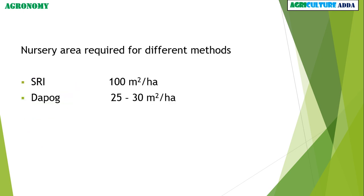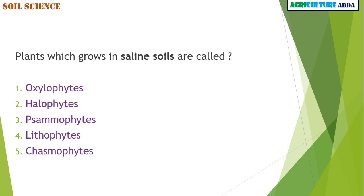The other method requiring nursery area is the SRI method, which requires 100 m² per hectare. As mentioned, the dapog method requires 25–30 m² per hectare. Now I will move to the soil science section.